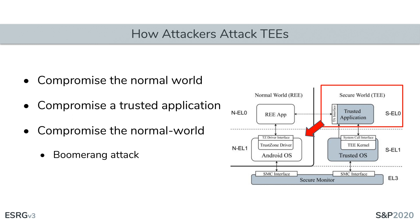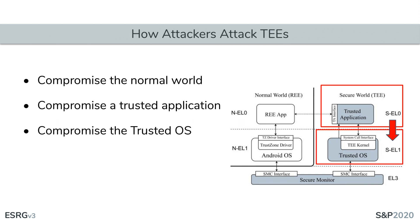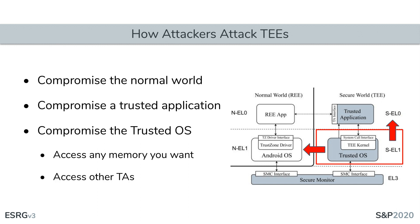With access to the driver, the attacker can start probing the secure world for vulnerabilities, selecting a trusted application as a target. The larger the trusted application, the more complex it is and the more likely a vulnerability will be found in one of its multiple commands. The attacker may check if they can make the trusted application arbitrarily access the normal world and perform a boomerang attack. If not, or if they already have kernel execution privilege, they can probe the trusted OS for vulnerabilities via system calls and accessible drivers from the exploited TA, ultimately gaining full control of the device.